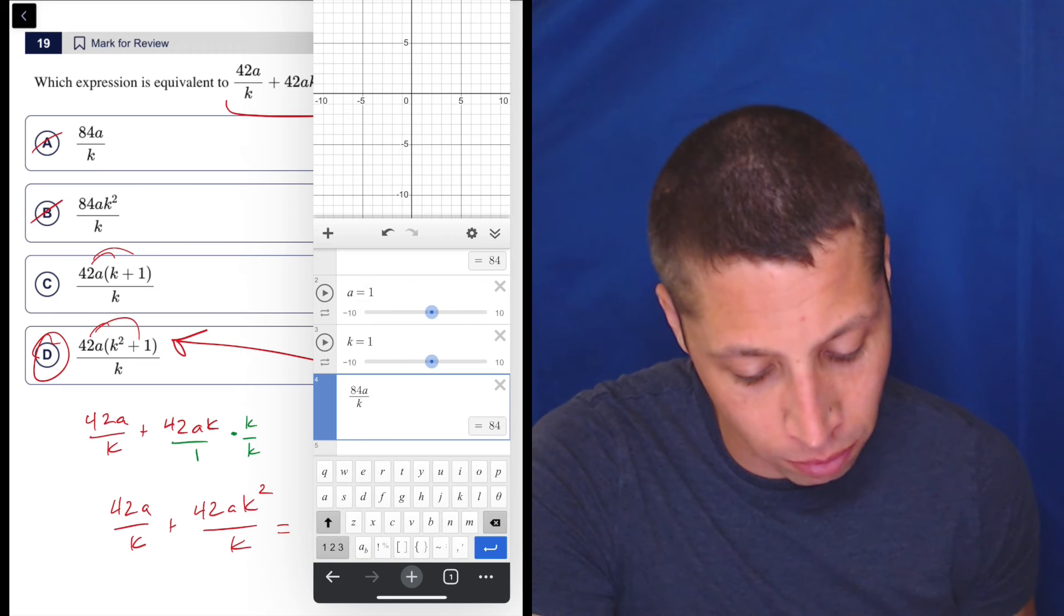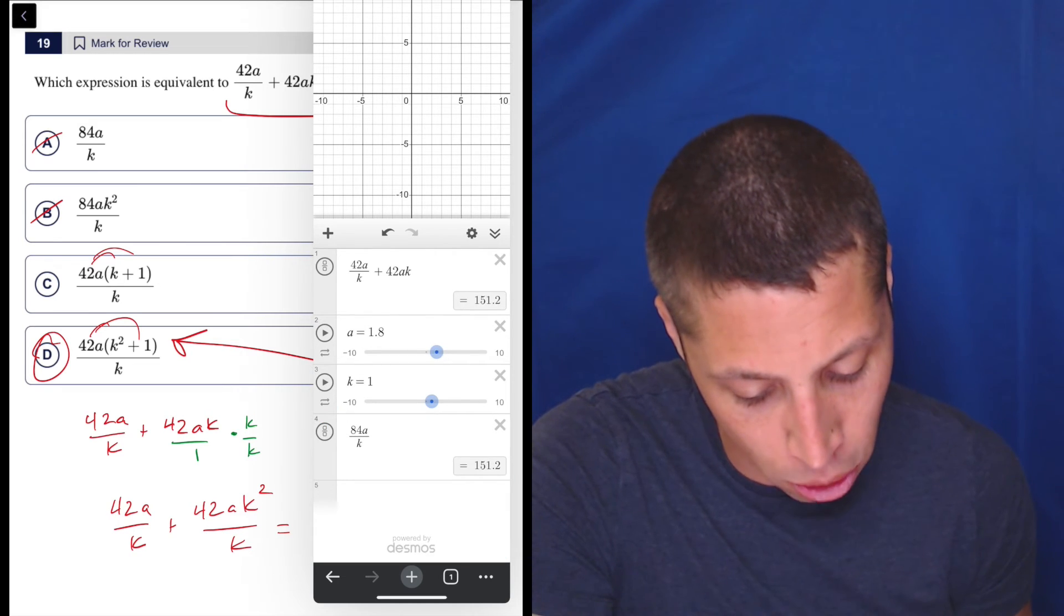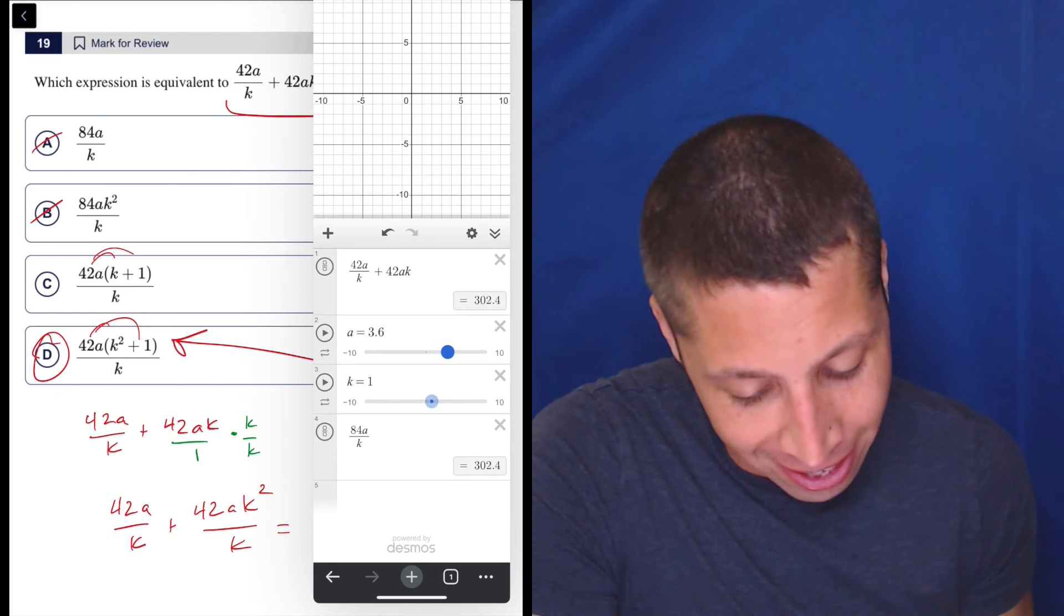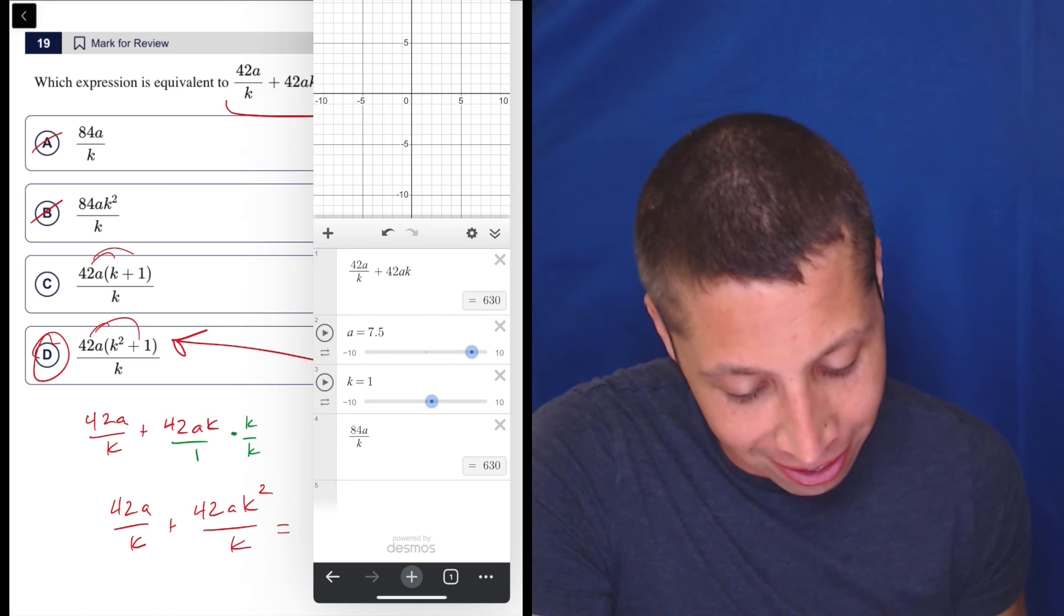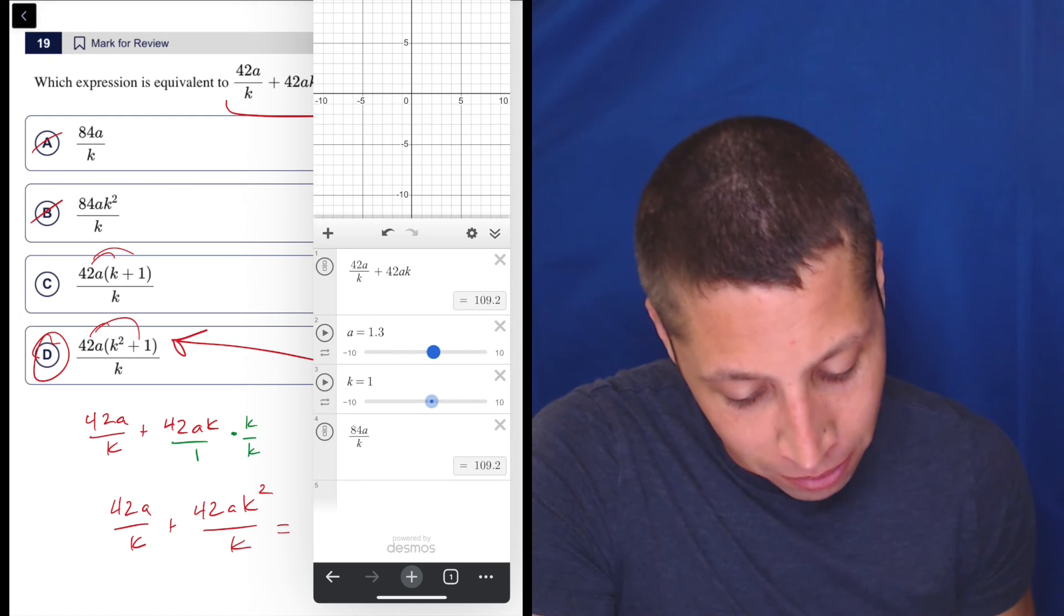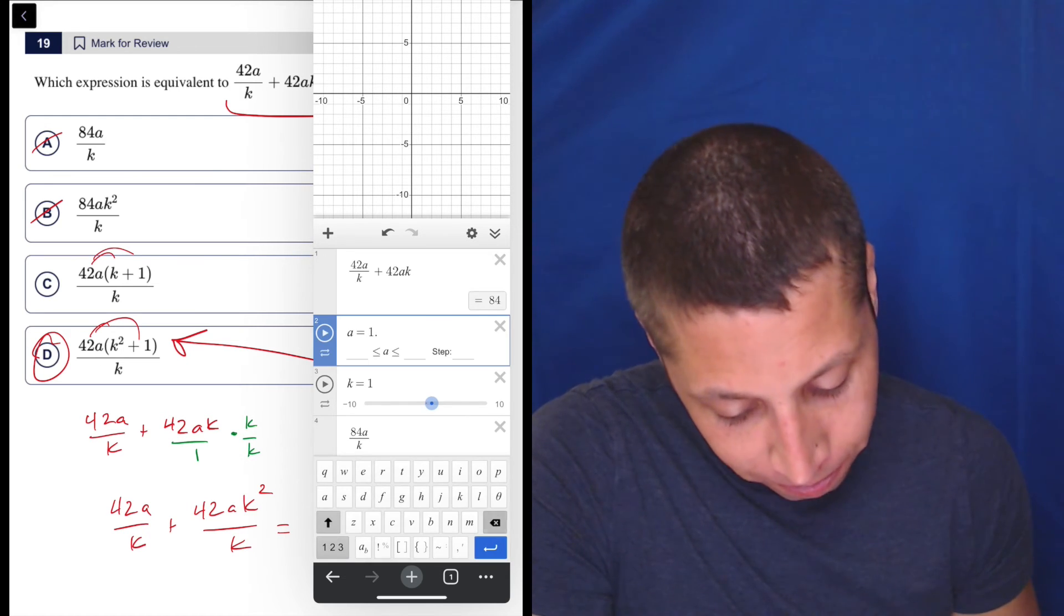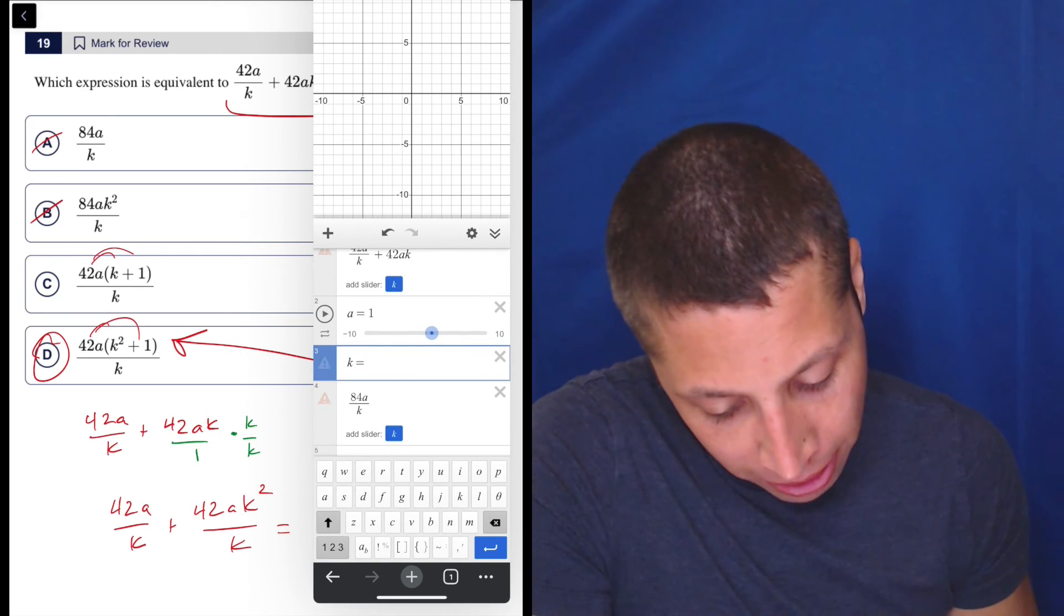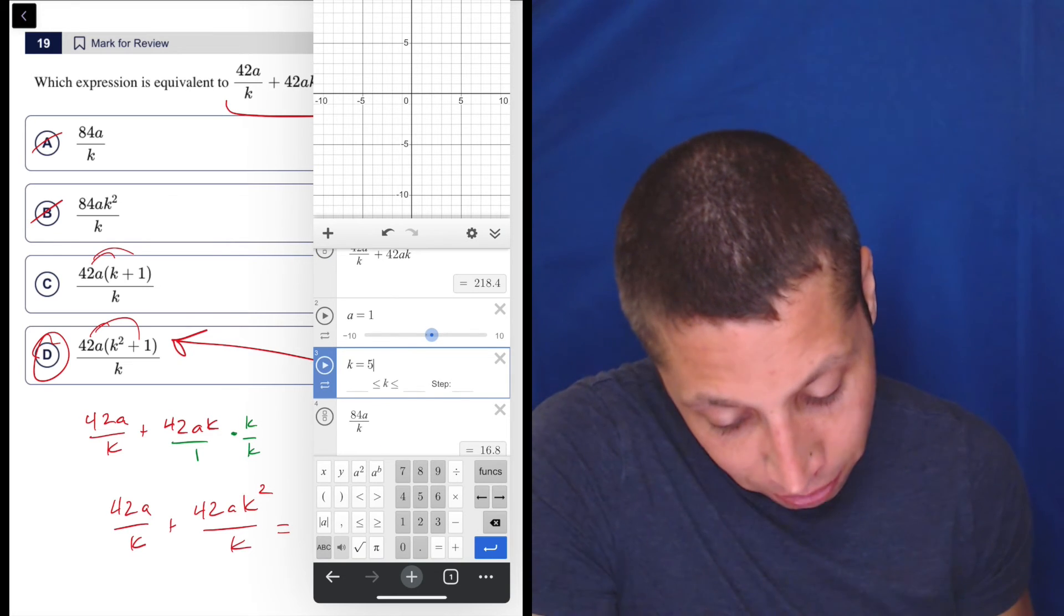But if we manipulate the numbers, so if I make a is equal to 2, now, oh, we still have the same number. Huh. Is it going to keep, oh, it's going to keep working. So a, look, a doesn't affect it, because it keeps being the same number. So let's bring that back to 1. Let's play with k. So k, I don't know, let's make that, I don't know, let's just say 5.